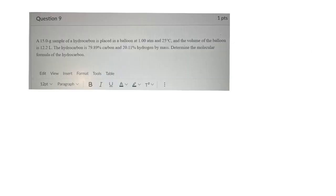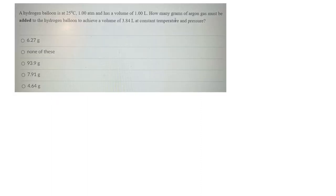This one here, they talk about getting a molecular formula. We didn't do any of those. Here's one. Hydrogen balloon, 25 degrees. Pressure, 1. Volume, 1. How many grams of argon gas must be added to the balloon to achieve a volume of 3.84 liters at constant temperature and pressure?